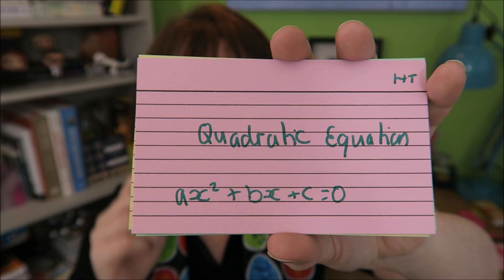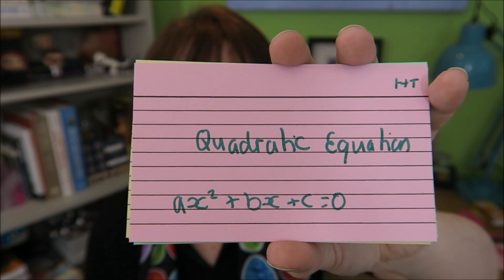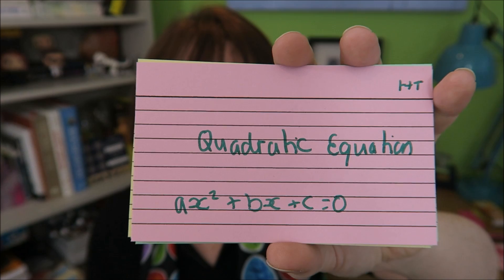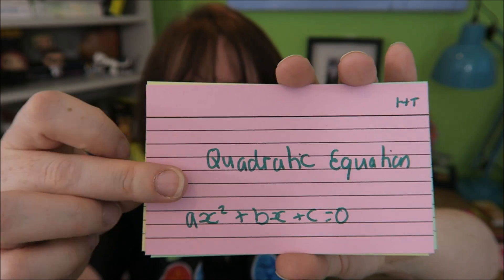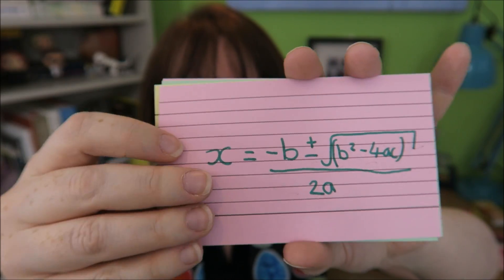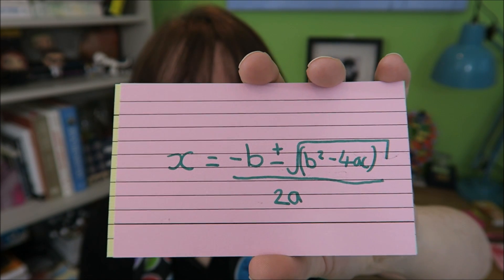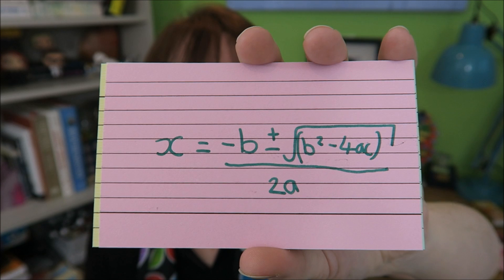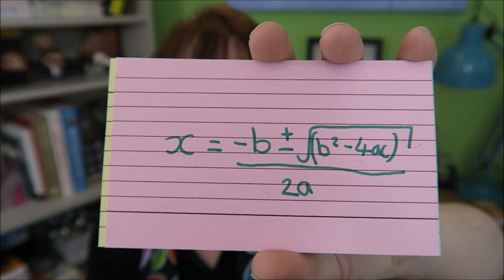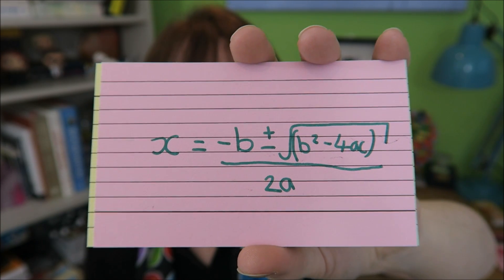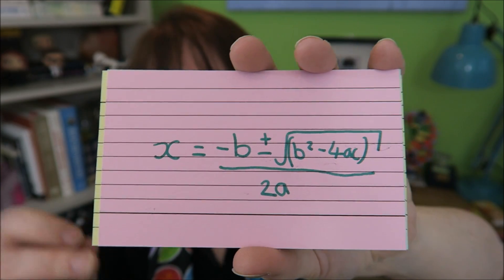Your quadratic equation. Where we have A X squared plus B X plus C equals zero. To solve that you need to use X equals minus B plus or minus the square root of B squared minus 4AC over 2A. You have to learn that one.